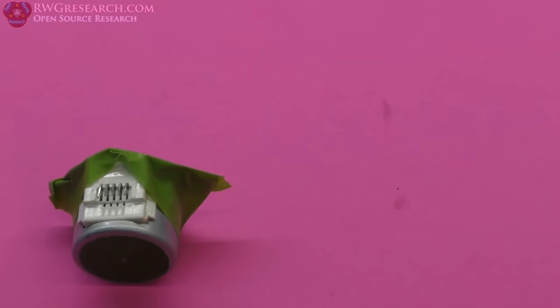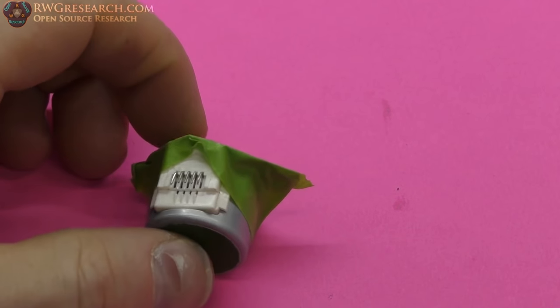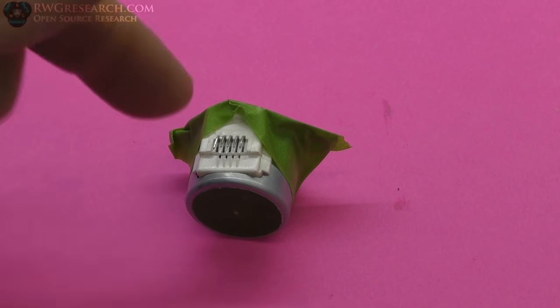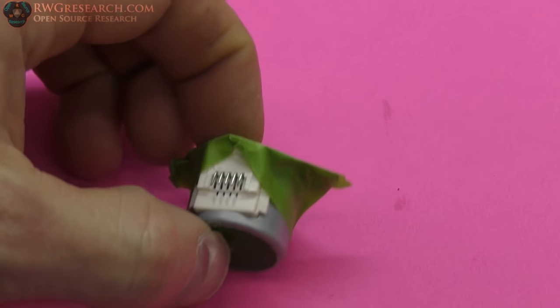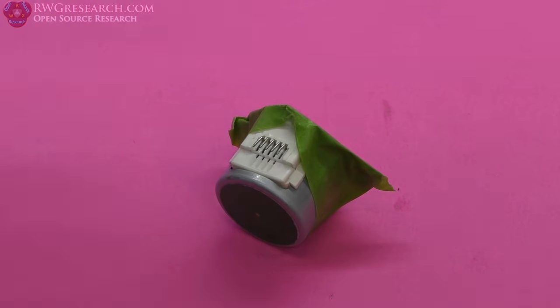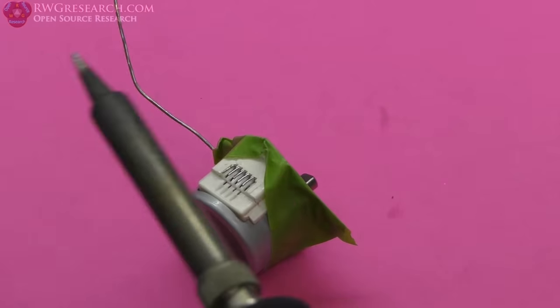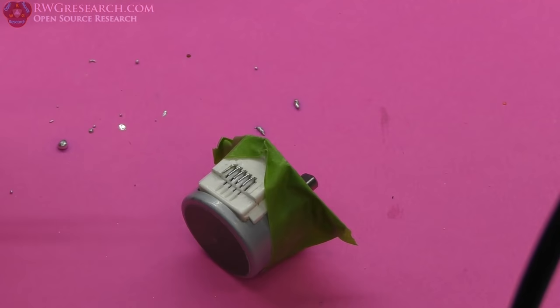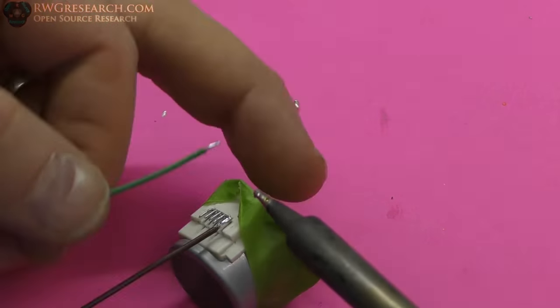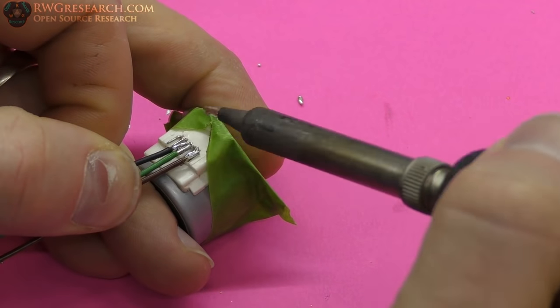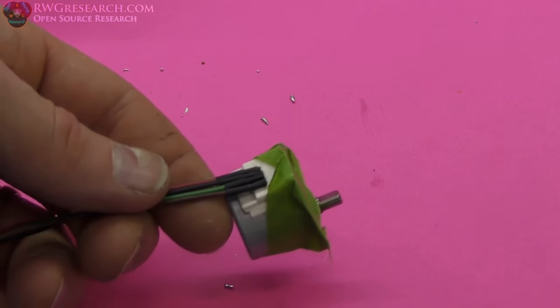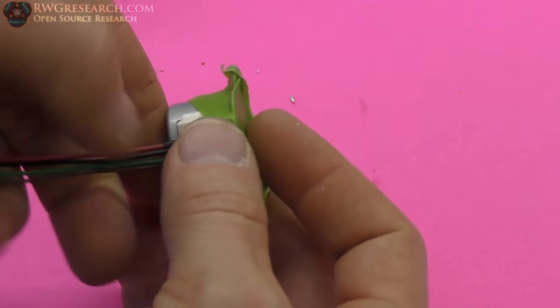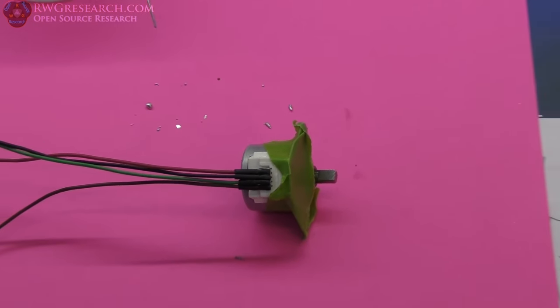All right, before we continue, I am going to temporarily, or actually permanently, solder the wires so that I can then test it before I crimp it back together. So we'll have to crimp it back together, but let's do some soldering first. All right, all heat shrinked up. We'll put some hot glue on there later once we get it crimped back together or something. Let's go ahead and connect it up to our controller and find out if it works.